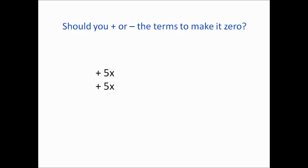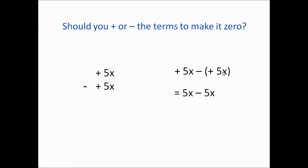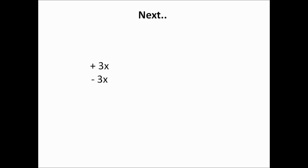In order to cancel — to make the terms become zero — we have to either add or subtract. In this case we have to minus. The reason is: on top it is positive 5X, and then we have minus, then plus 5X below. Make sure when you plan to add or subtract, you include the sign — whether it's positive or negative. So 5X minus positive 5X becomes zero. This is the meaning of elimination — we eliminate the 5X terms and make them zero.